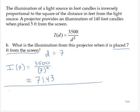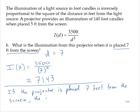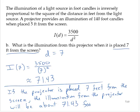Conclusion: If the projector is placed 7 feet from the screen, then the illumination from the projector will be about 71.43 foot candles.